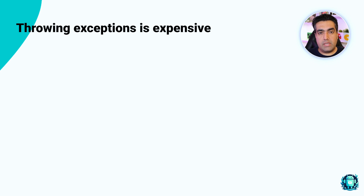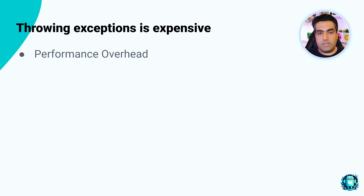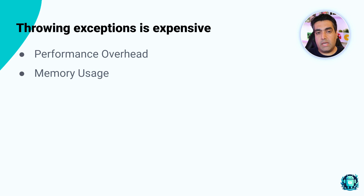Throwing exceptions in Kotlin, as in many other programming languages, can be considered expensive due to several reasons. When an exception is thrown, the JVM needs to capture the current state of the stack, which involves creating a stack trace. This process is computationally intensive and can slow down the application. Creating an exception object and its stack trace consumes memory. If exceptions are thrown frequently, this can lead to increased memory usage and potentially cause garbage collection issues.